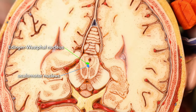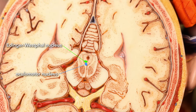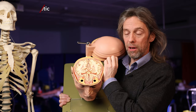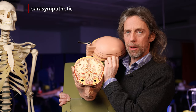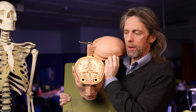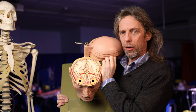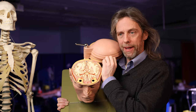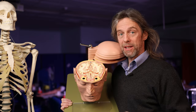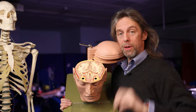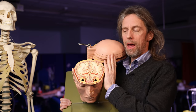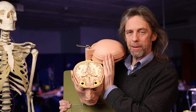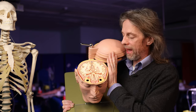Right next to them we have the Edinger-Westphal nucleus. The Edinger-Westphal nuclei — there's one on either side — are parasympathetic nuclei. They are the neuron cell bodies of pre-ganglionic parasympathetic neurons that are going to run to the eye and do parasympathetic jobs. Constriction of the pupil is a parasympathetic response, and the fattening of the lens is a parasympathetic thing.